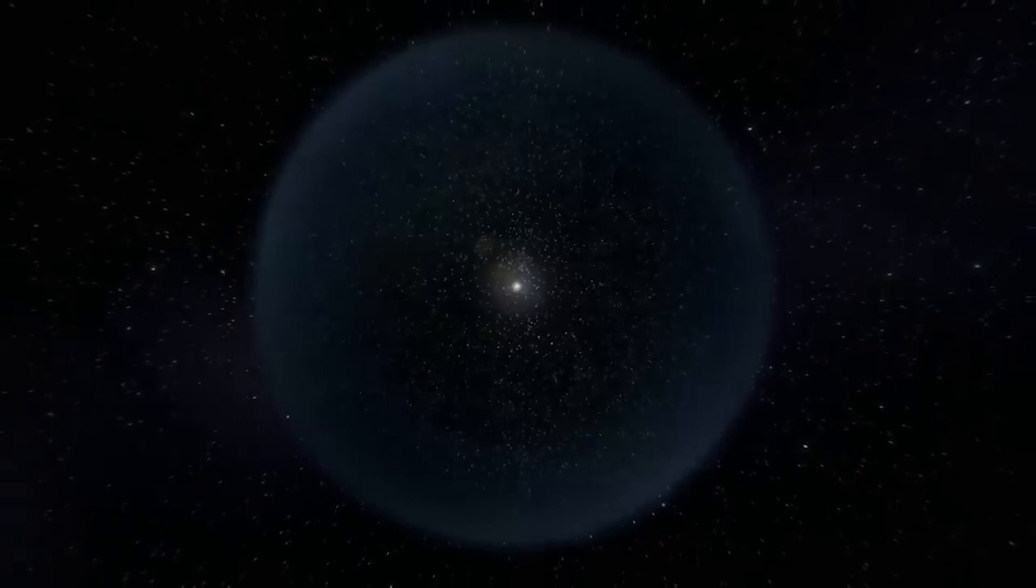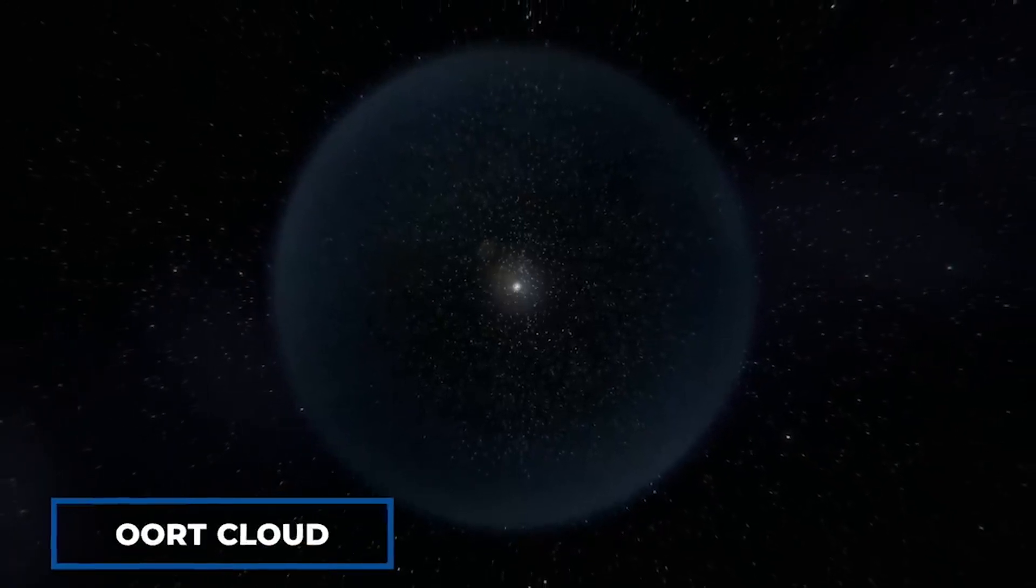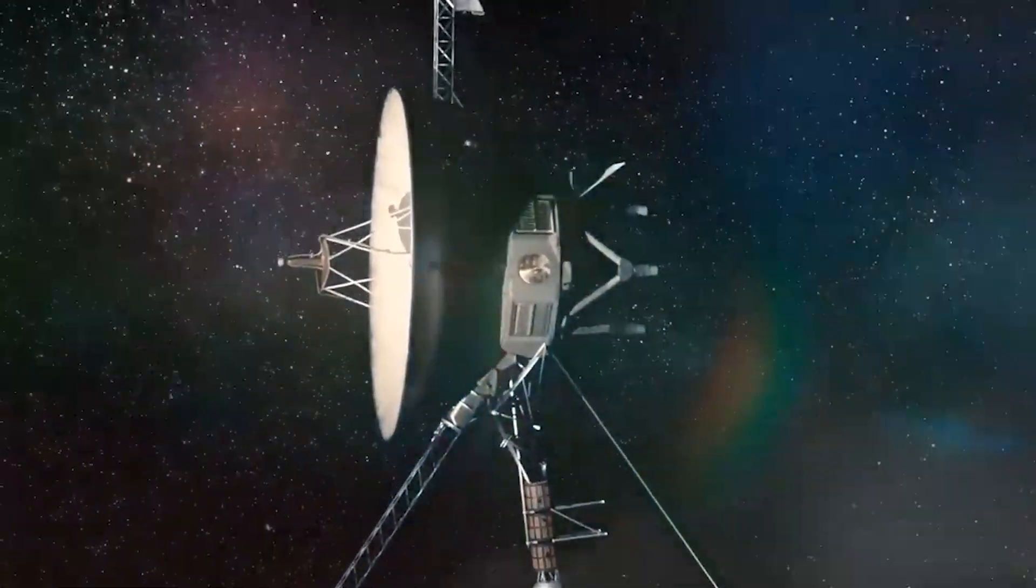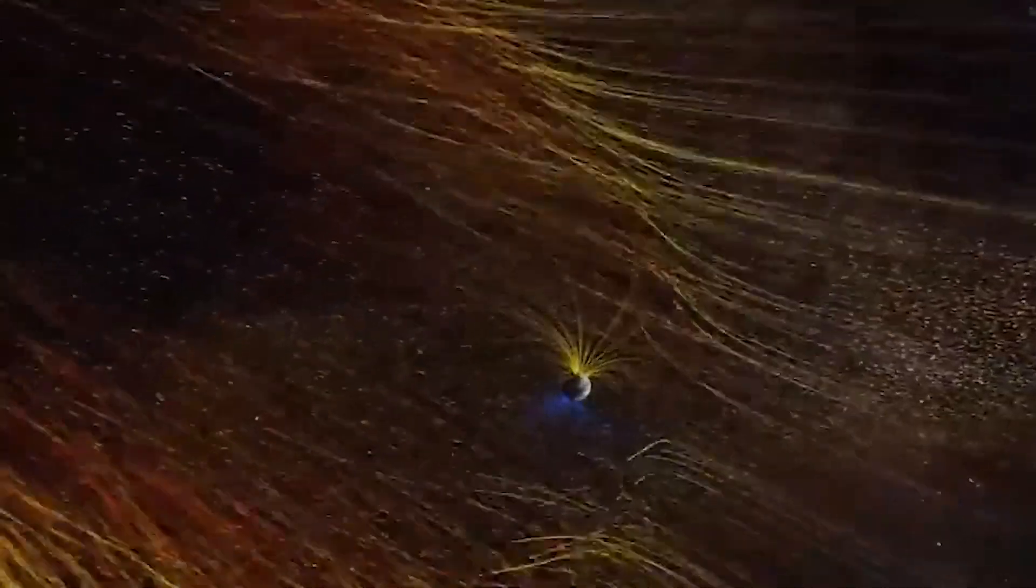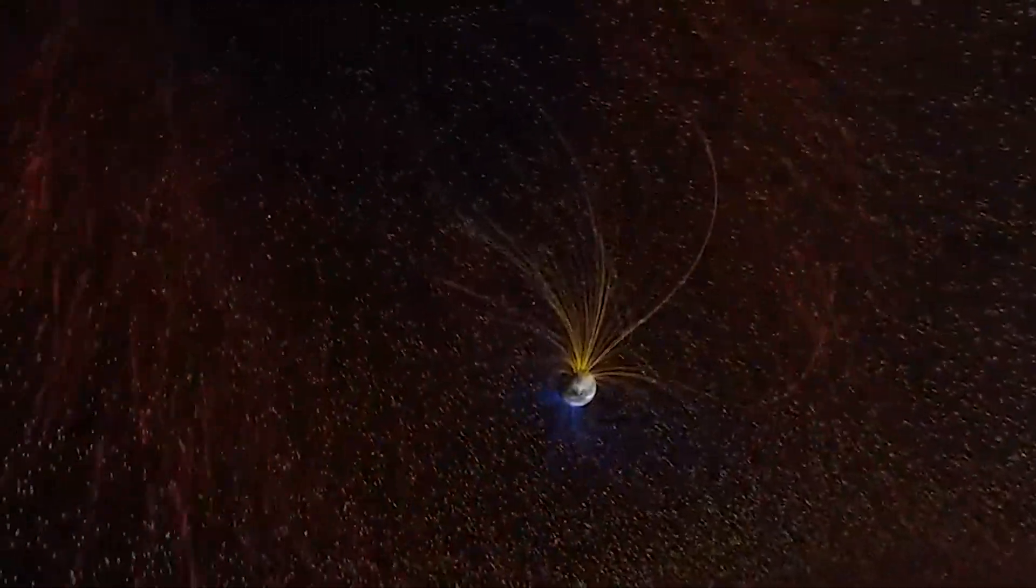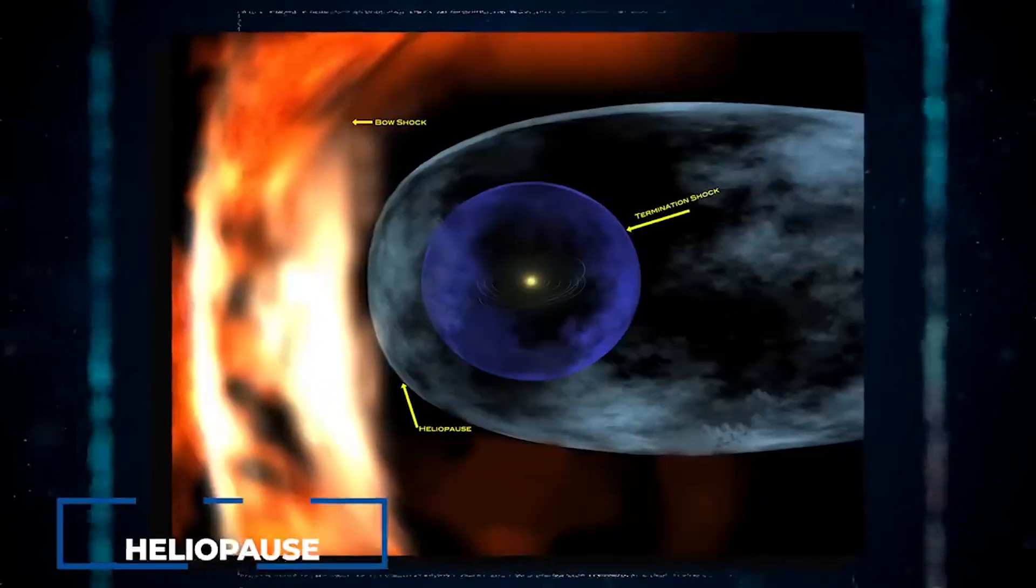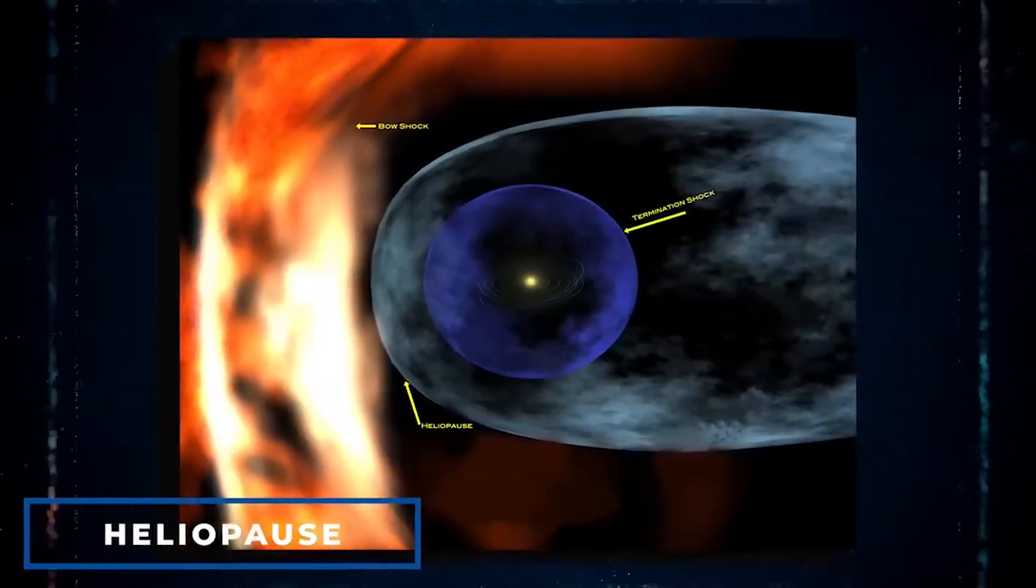Far beyond our solar system lies the enigmatic Oort Cloud, a celestial gathering of comet-like entities bound together by the sun's gravitational pull. Stretching halfway towards the nearest star, it remains a distant realm that the Voyagers are slowly but steadily making their way towards. However, interstellar space, where the solar wind phenomena give way, is a more accessible frontier. It's where the heliopause, the border between our solar system and the interstellar space, marks the beginning of uncharted territory.